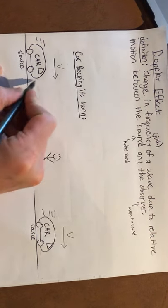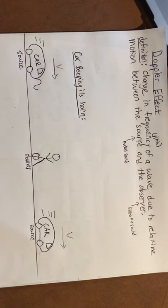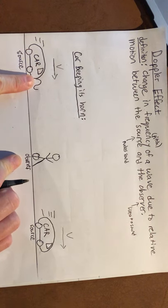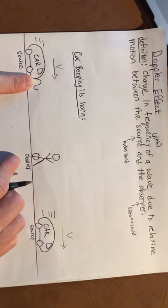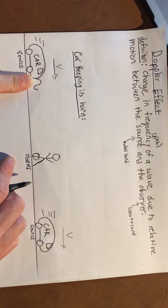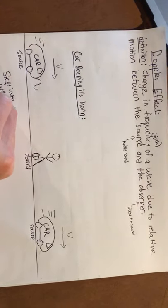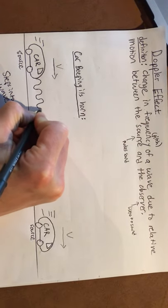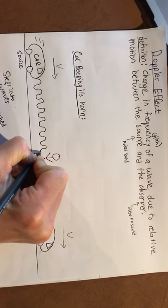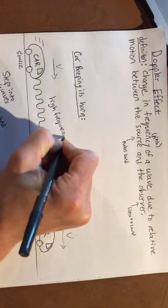The car makes sound waves that travel to the person. Every time the car makes a sound wave, it takes a step closer to the wave it just made — it's sort of inside the wave it just made. It then produces more waves, stepping into the waves it's creating. The waves get squished together, and that sounds like a high frequency or pitch.